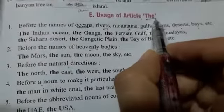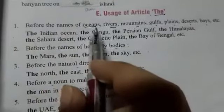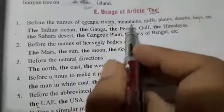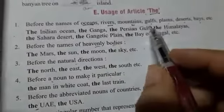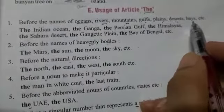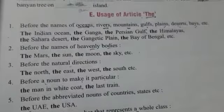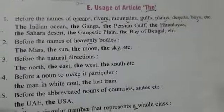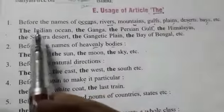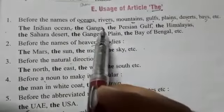The ka use hum kaha kaha pe karthi hai. First one is before the names of oceans, rivers, mountains, gulfs, plains, deserts, bays, etc. Means joh bhi river ka name ho, oceans ho, mountains ho — like the Indian Ocean, the Ganga river.